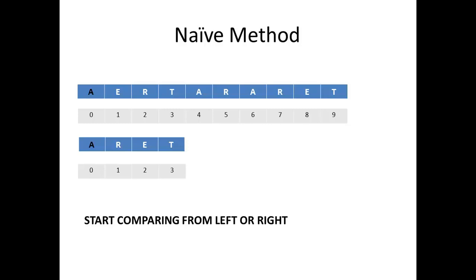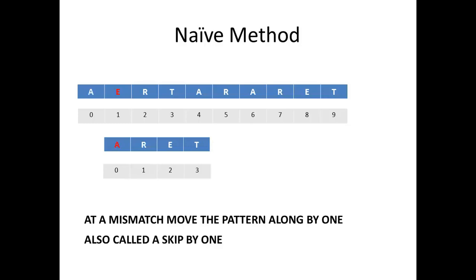When you get a match of a character, you simply move to the next character in the pattern, and when a mismatch occurs, we simply shift our pattern by one to start comparing our pattern with the part of the text string one position to the right. This move by one is also called the skip by one.